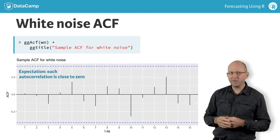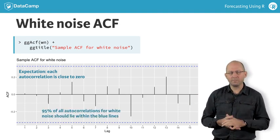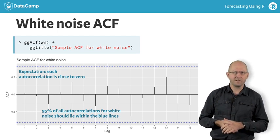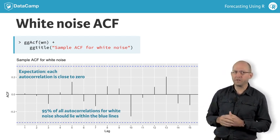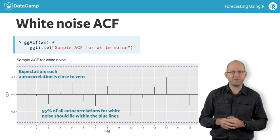In this example, the first 15 spikes are all within the blue lines, as you would expect. Even the largest spike at lag 10 is well within the range you would expect for a white noise series.